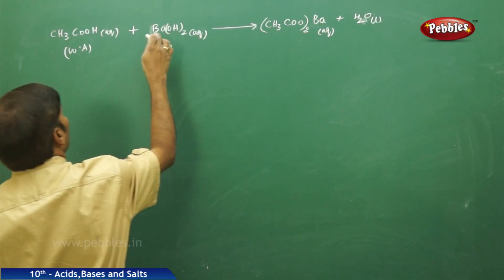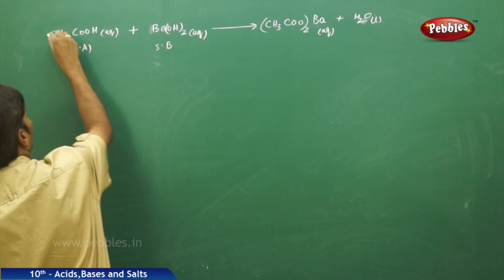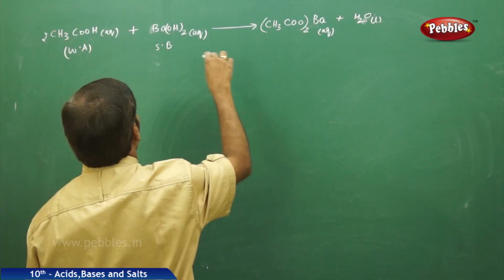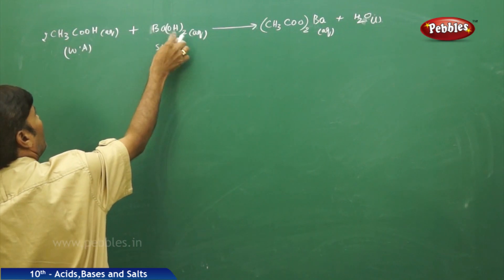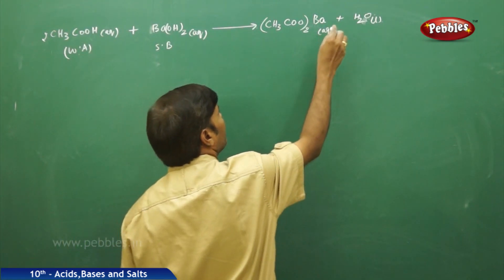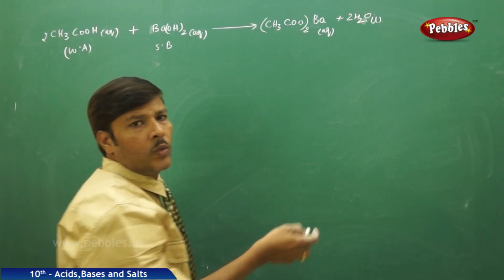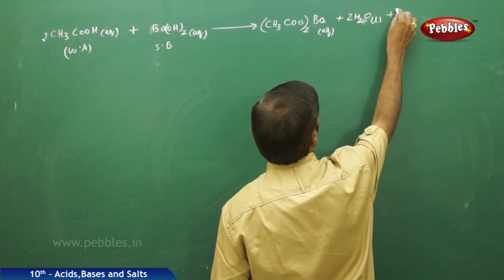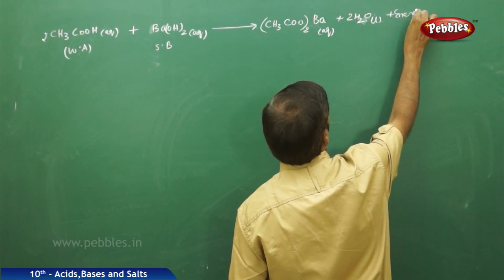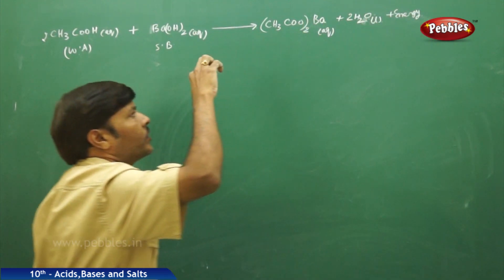Balance the equation. There are two acetates, so take two over here. There are actually two oxygens but you have only one oxygen here. The reaction is balanced and also here sufficient amount of energy is released, so it is an exothermic reaction.